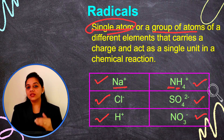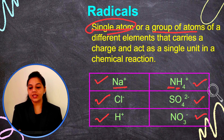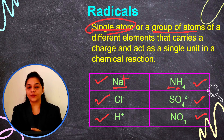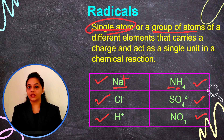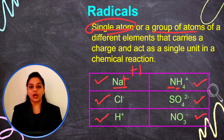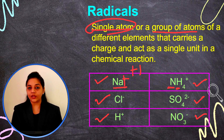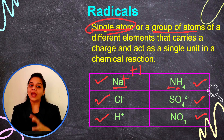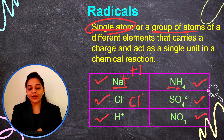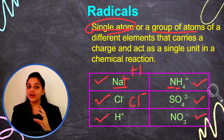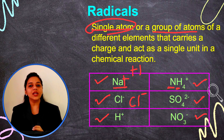Charge is always written on the right-hand side as a superscript. Charge means the valency of the particular radical. If sodium has a plus charge, that means plus one — it has one extra electron, it can donate that electron, and will follow the octet rule. Chloride ion has a minus charge, meaning it has one electron less, so it will gain one electron and follow the octet rule.